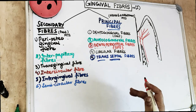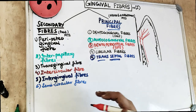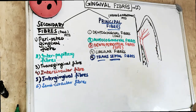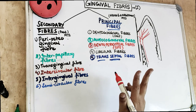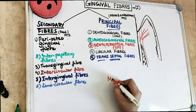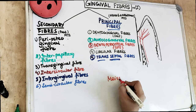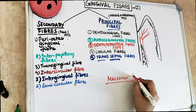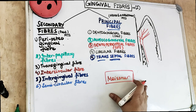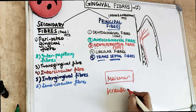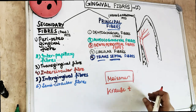The nerve supply of the gingiva comes from nerves arising from the PDL and from labial, buccal, and palatal nerves. There are two kinds of receptors: Meissner's receptors in the gingiva, which are tactile (touch) corpuscles, and Krause's end bulb receptors, which are temperature receptors.